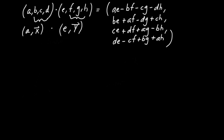Now, what you'll notice here is that I have AE, which is the product of the two scalar components. So let me rewrite that: AE. And then I have this triad of terms: minus BF, minus CG, minus DH. Notice the order — I have B times F, C times G, D times H. So let me pull out a minus sign: it's going to be minus the quantity (BF + CG + DH).